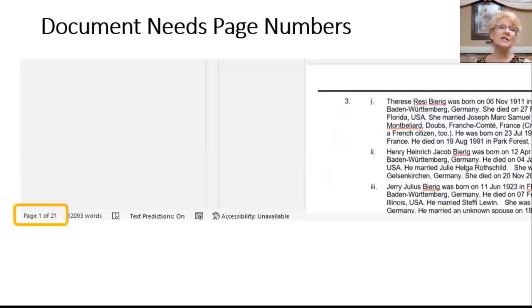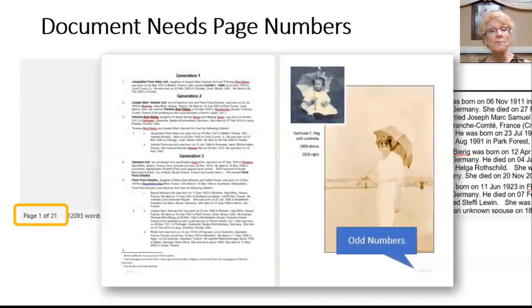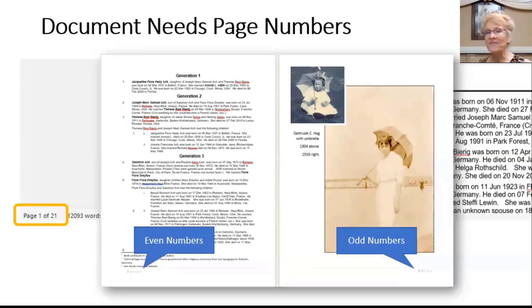It's a good idea to use page numbers when you have several pages. My cursor is currently on the first page of 21. The rule with page numbers is to start numbering on a right-hand page, so odd numbers — one, three, five — always fall on the right side of a spread, and even numbers — two, four, six, eight — are always on the left. You may have to add a blank page to ensure that.